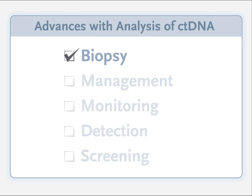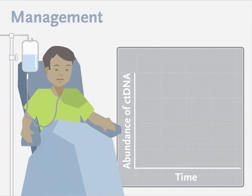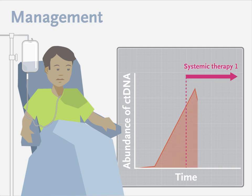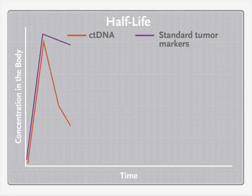ctDNA could play a role in tracking therapeutic response to cancer treatments, since ctDNA levels in individual patients correlate well with changes in tumor burden and treatment response. The short half-life of ctDNA is a potential advantage in measuring real-time tumor burden, as compared with standard tumor markers, which have half-lives of days to weeks.